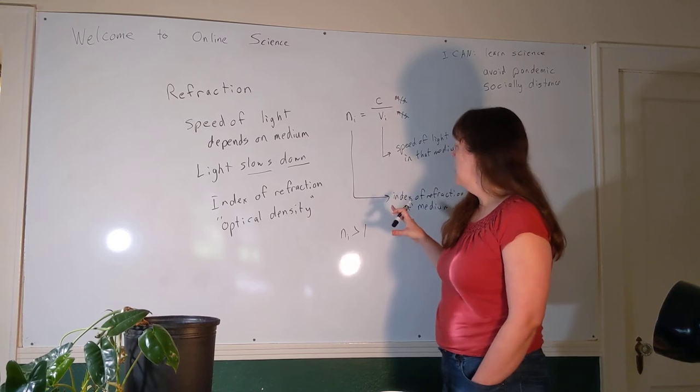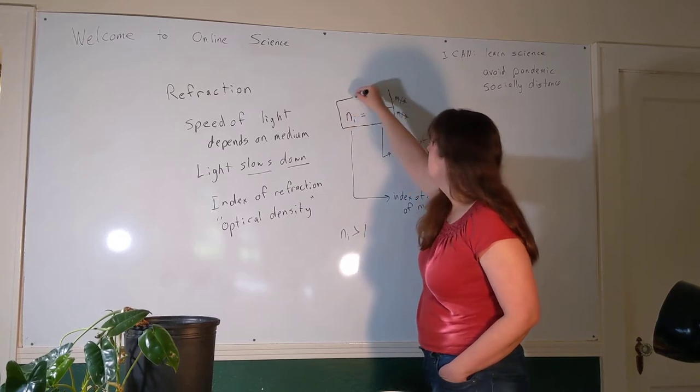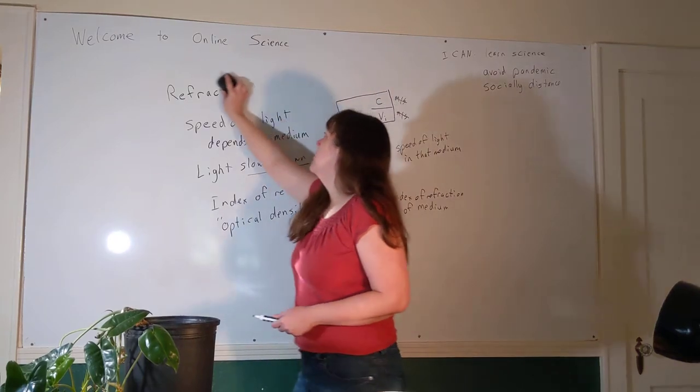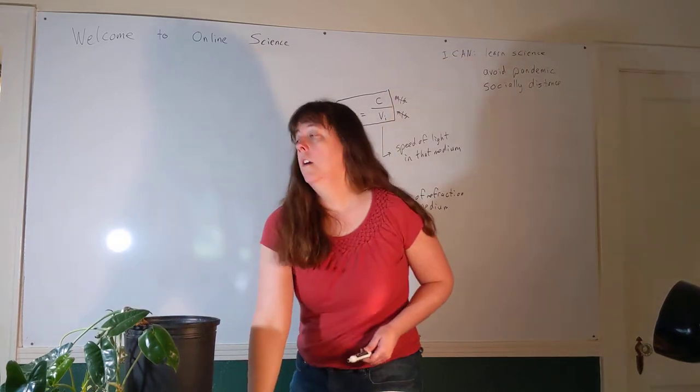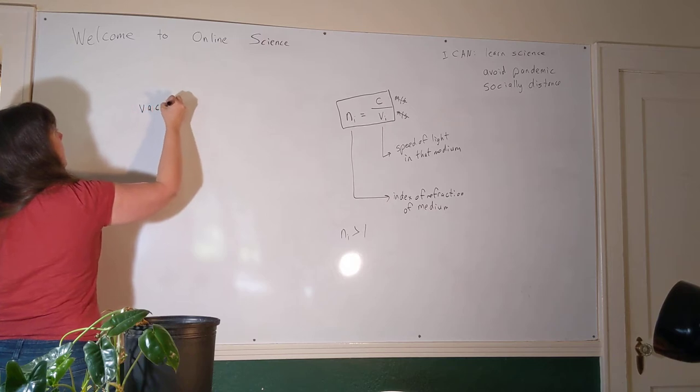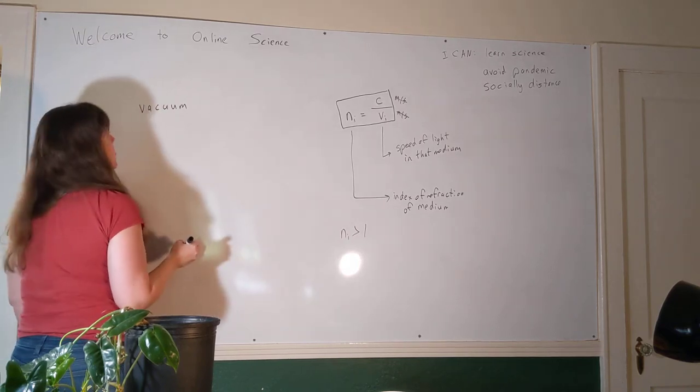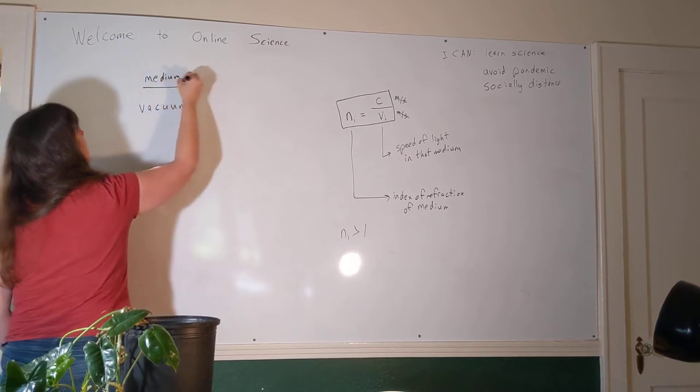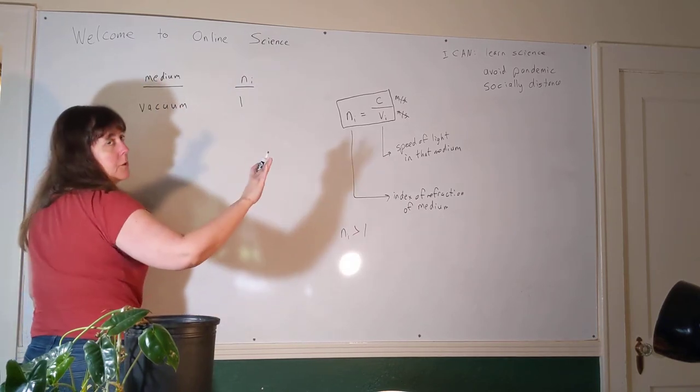Index of refraction depends on the medium and it's how much light slows down. This equation is an important one, so put a box around it somewhere. Let's talk about what the actual value of n is for a few different media. We say that n for a vacuum is exactly one, one point all the zeros that you want.